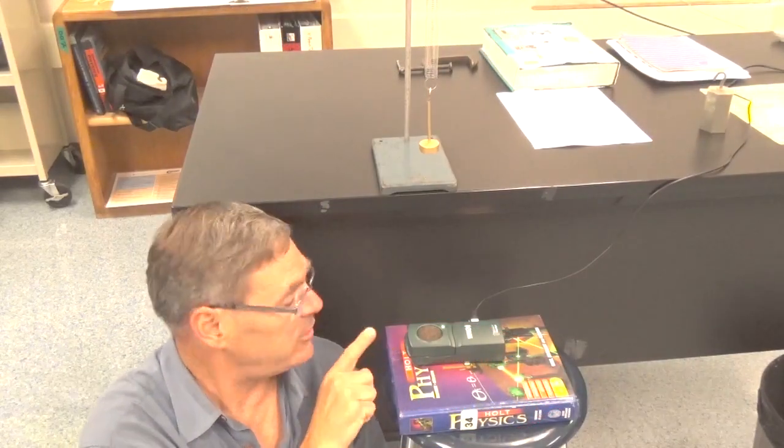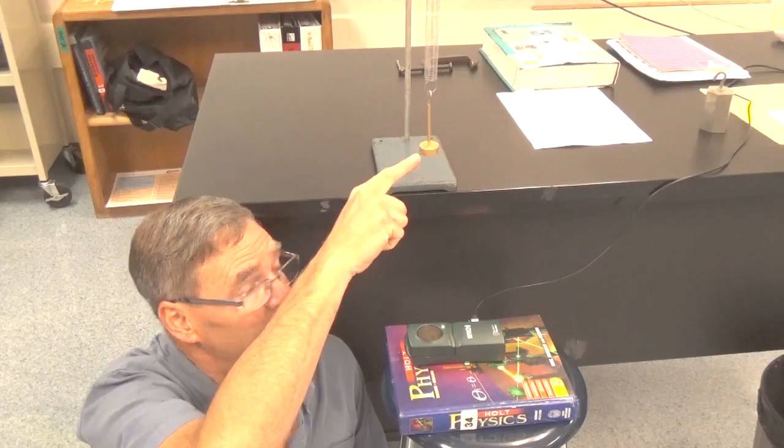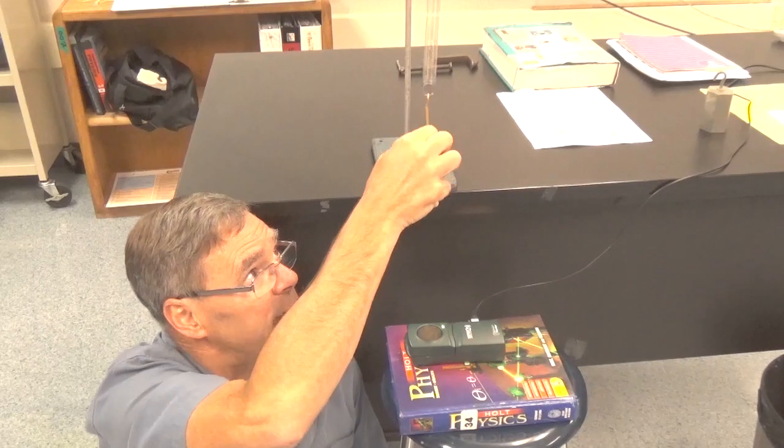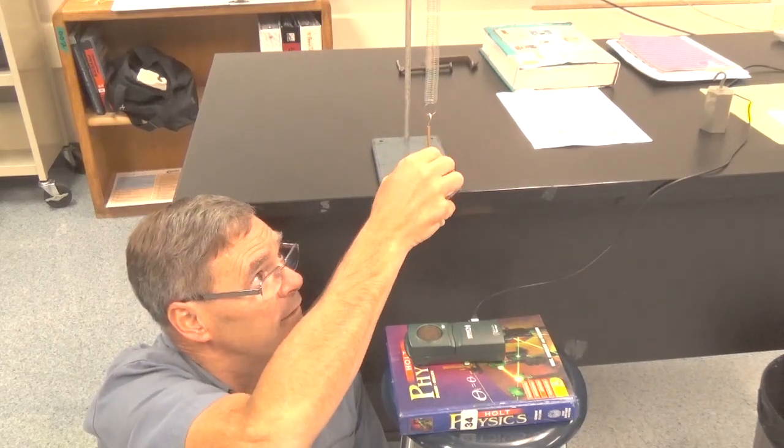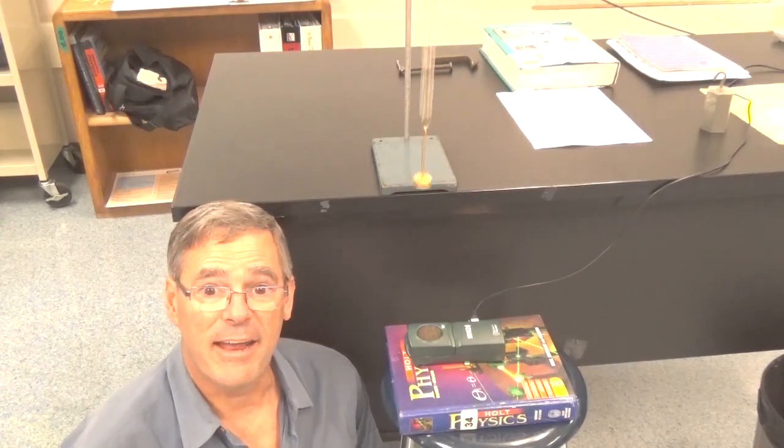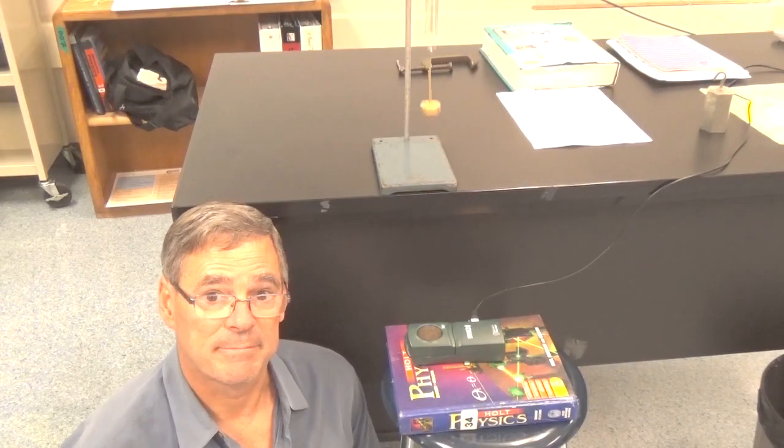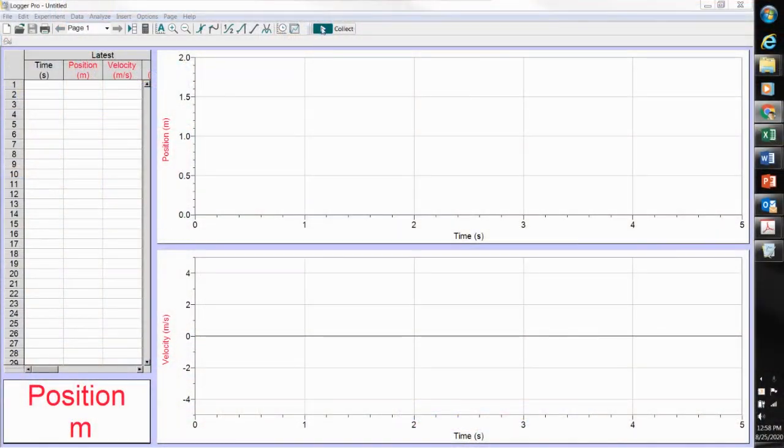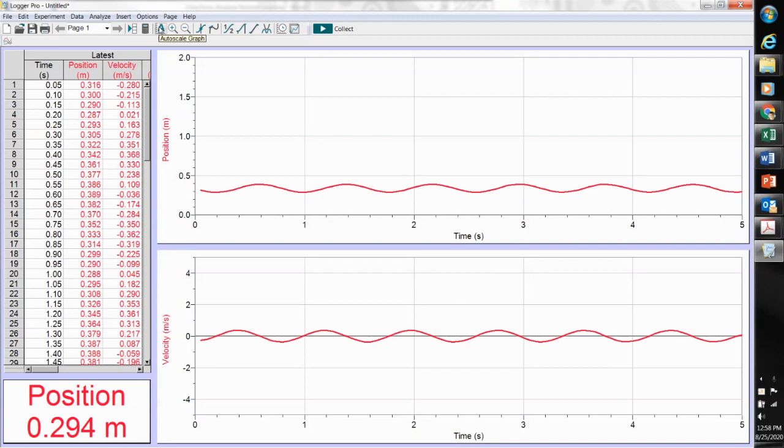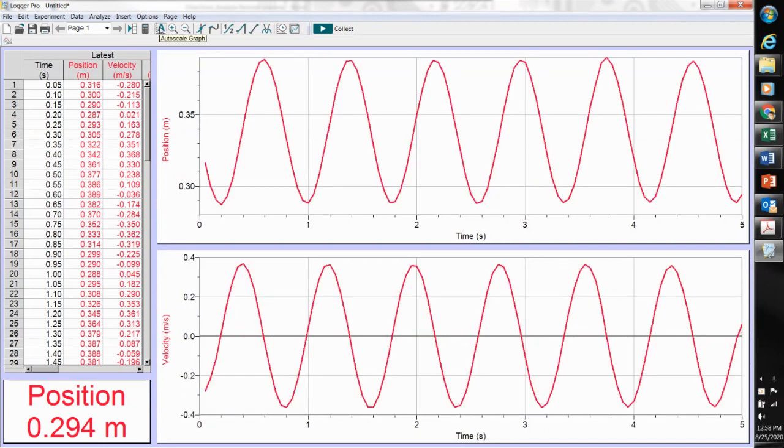Now I've set the motion sensor to look upward and directly above it I've put a mass that is on a spring. So I can set the spring into oscillation. And we'll collect data on an oscillating spring. So here we go. And I'll auto scale it to make it larger. And there we have our position and velocity as a function of time for an oscillating spring.